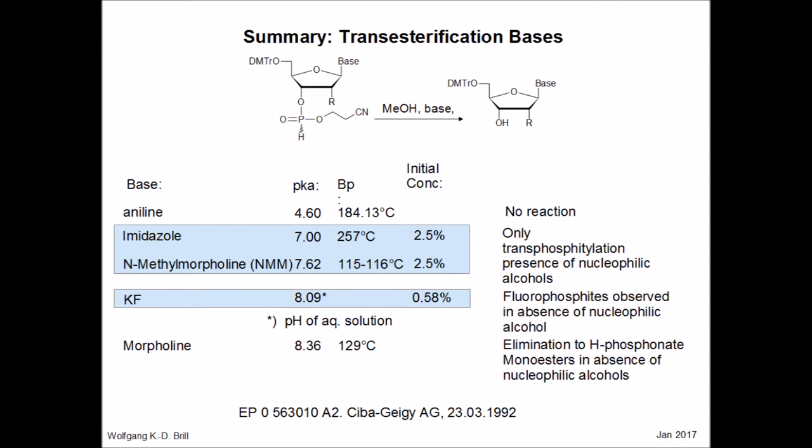This slide evidences the pH range in which a meaningful transesterification reaction of the hydrogen phosphonate may occur. Aniline with a pKa of 4.6 is too acidic to drive the reaction. However, imidazole and methylmorpholine, or aqueous potassium fluoride, promote the transesterification reaction.